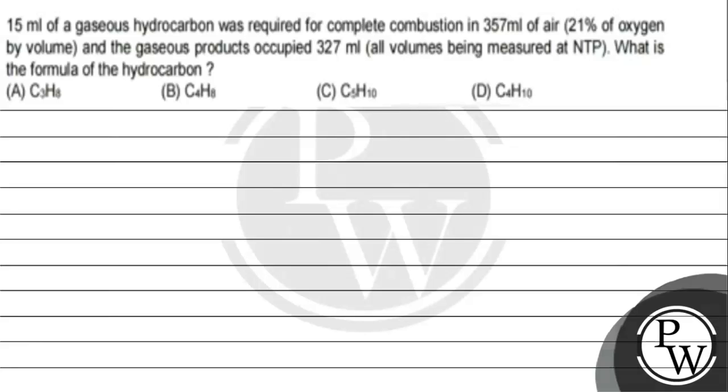Hello, let's read this question. The question says 15 ml of gaseous hydrocarbon was required for complete combustion in 357 milliliter of air which contains 21 percent of oxygen by volume, and the gaseous product occupied 327 ml, all volumes being measured at NTP. What is the formula of the hydrocarbon?